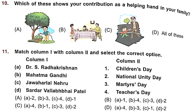Question 10: Which of these shows your contribution as a helping hand in your family? Option A is watering the plant — helping in household chores. Option B is having dinner — obeying and helping. Option C is helping our elders — also correct. Since A, B and C are all correct, the right option is Option D: all of these.